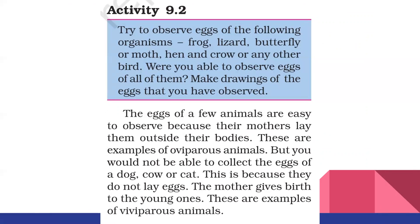Examples of viviparous animals: the animals which give birth to young ones are called viviparous animals. Examples include human beings, cow, goat, camel, elephant, etc. They do not lay eggs. Their young ones are completely grown and developed in the female's body.